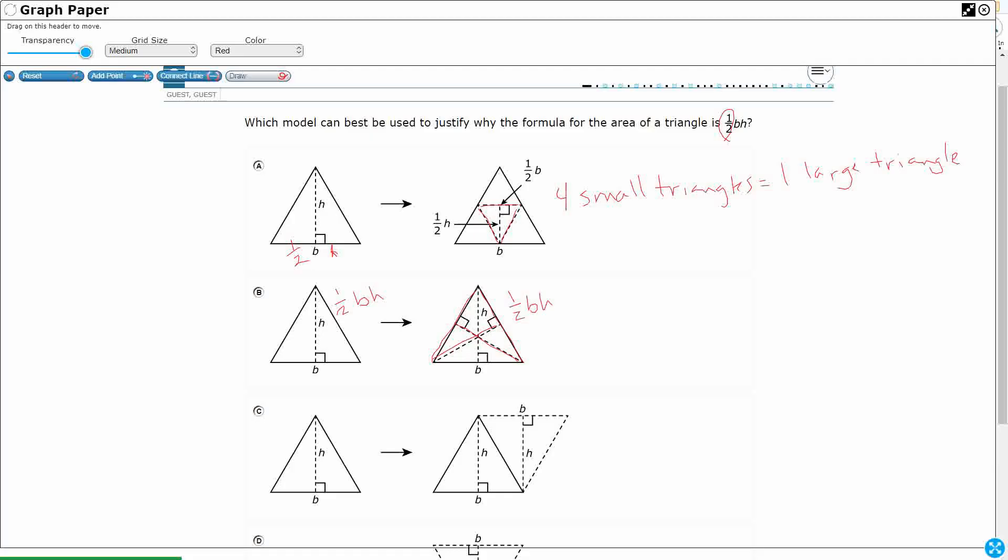Alright, so C, what are we doing with C here? If I wanted to find the area of this triangle, find one-half base times height. Look what they did here. So this base is this base, and this height is this height. Okay, so they doubled it.